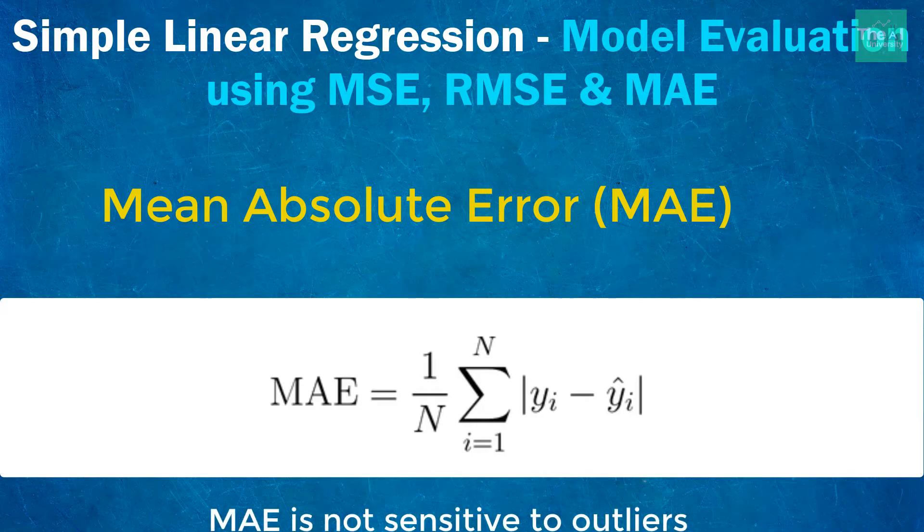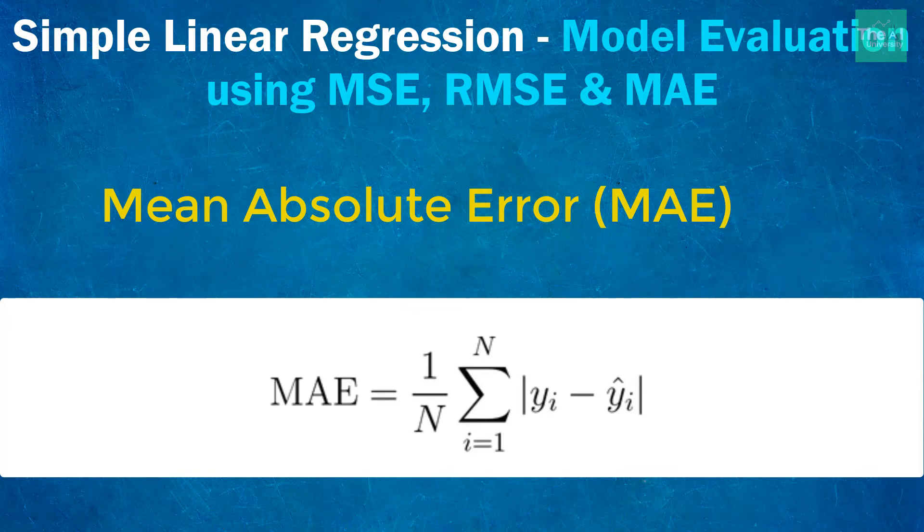Hence, it doesn't penalize the huge errors as much as MSE does. So MAE is used in functional areas like finance where $30 error is exactly 3 times worse than the $10 error, whereas in case of MSE metric, it actually thinks that a $30 error is 9 times worse than $10 error.